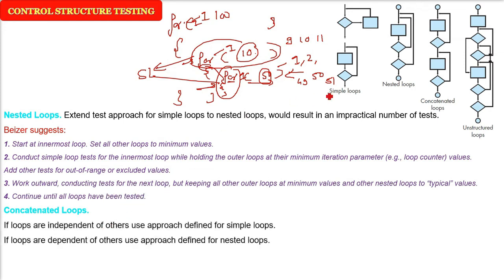Concatenated loop can be of two types. The loops are independent or the loops are dependent. If they are independent, don't worry, take these two loops and check them as simple loops. If they are dependent, then just what we have defined in nested loops, use that way to do it.